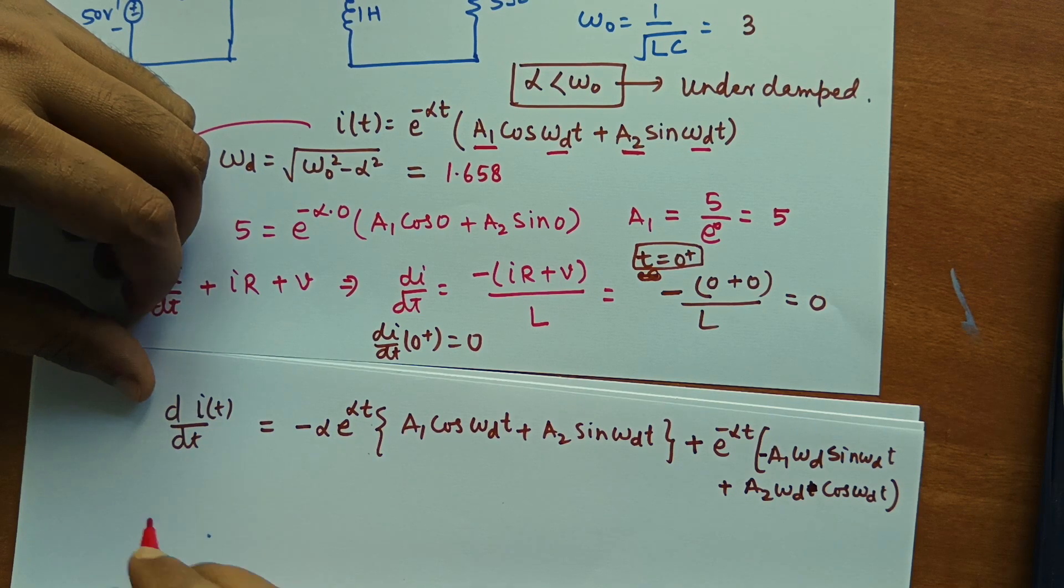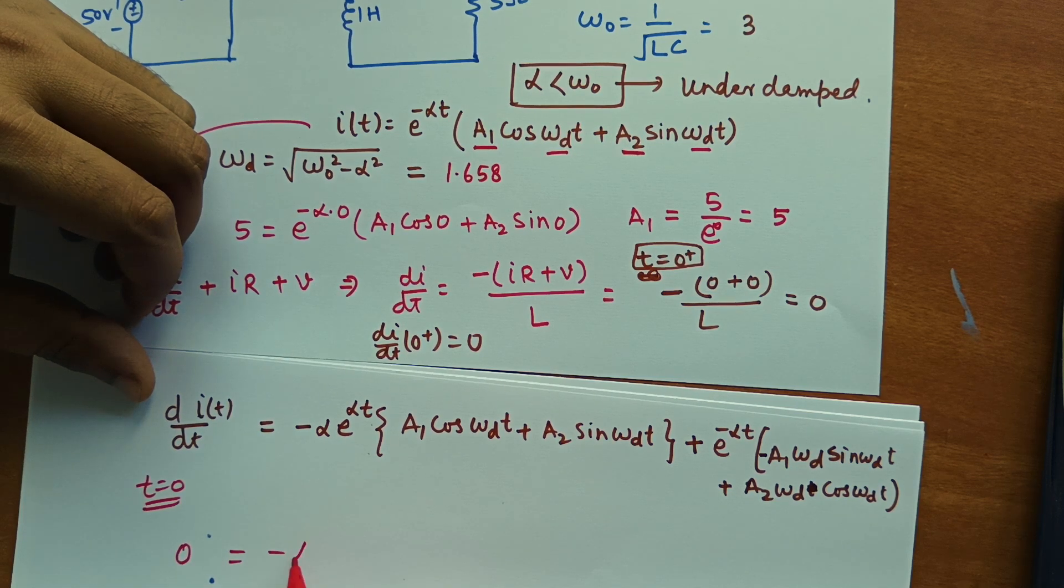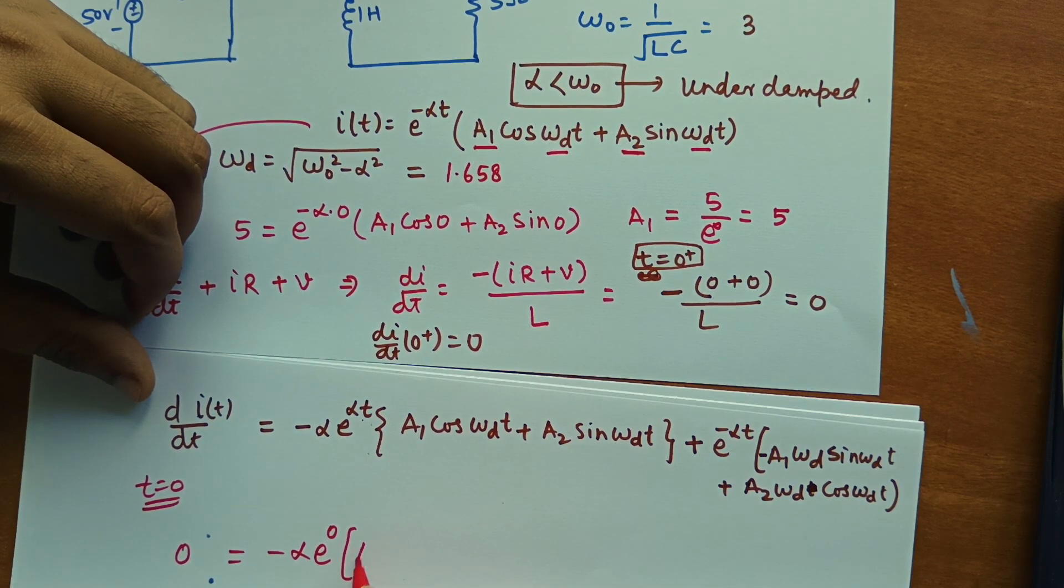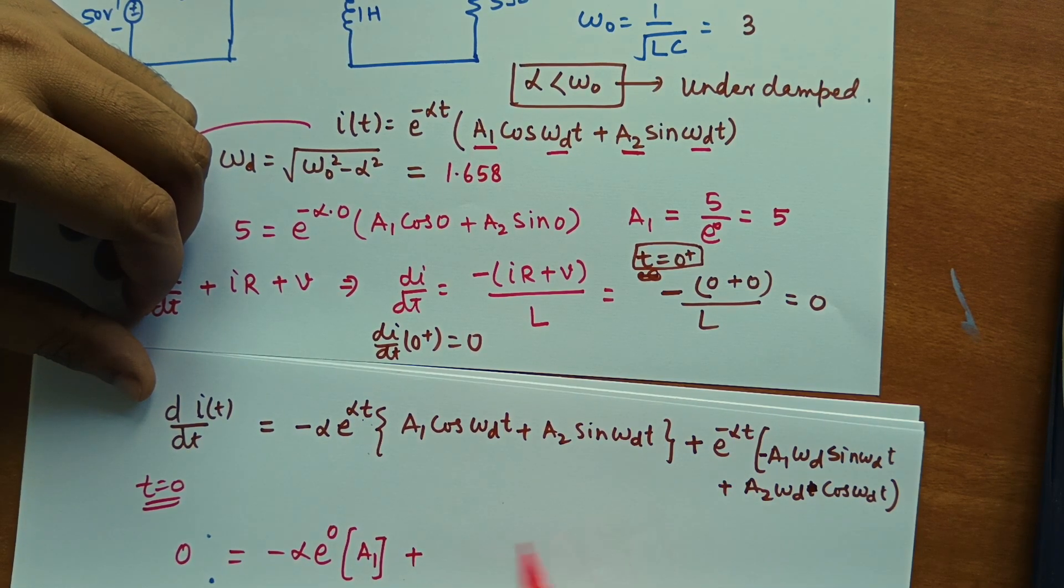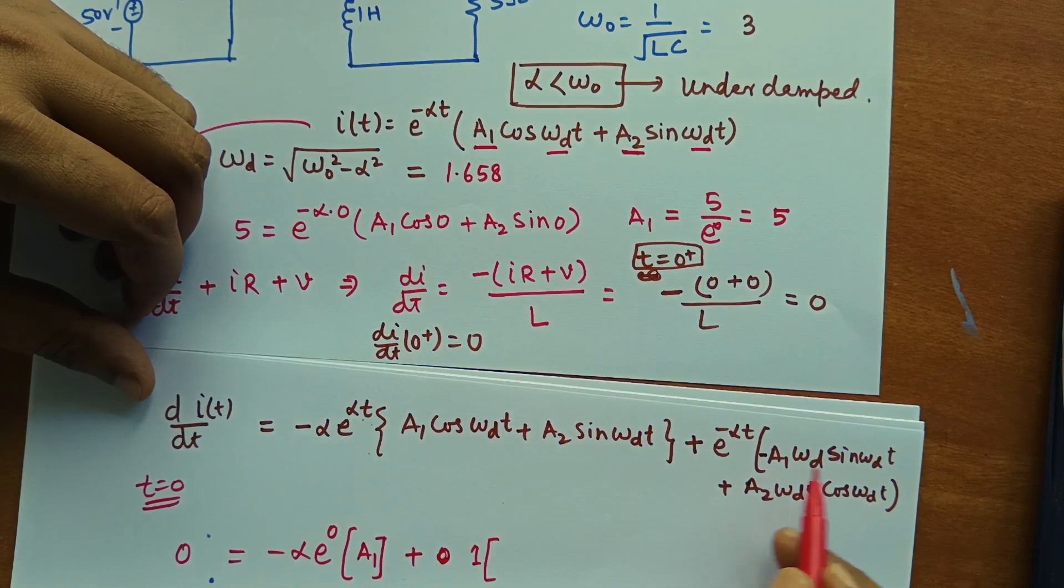Let us put the initial condition. So at t equal to 0, this should be 0 equal to minus alpha t equal to 0 e to the power 0. Here t equal to 0 if we put this is 0. Only we have a1 cos 0. So cos 0 is 1. Then plus e to the power of 0 is 1.